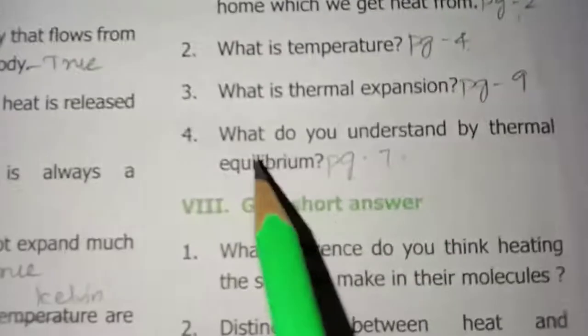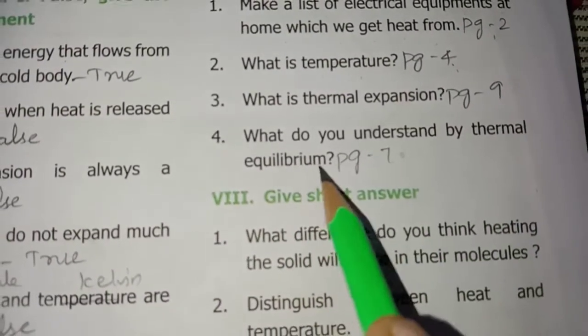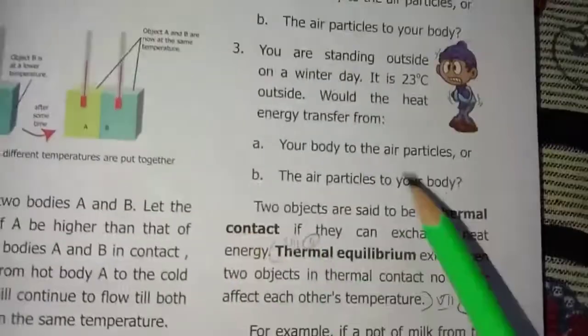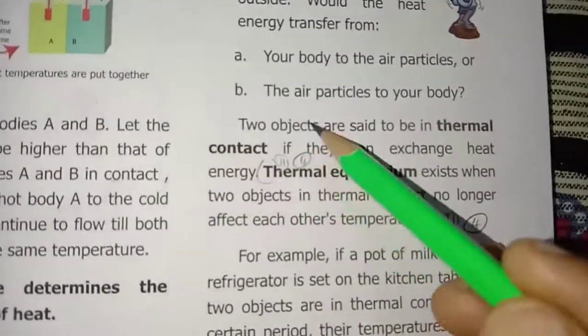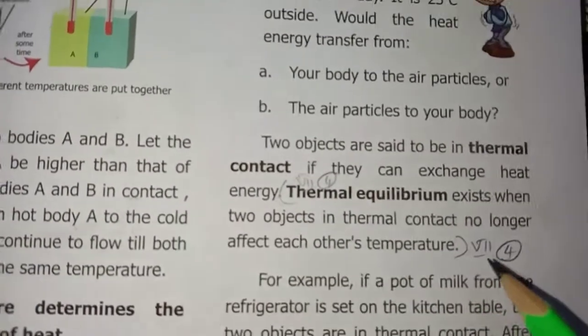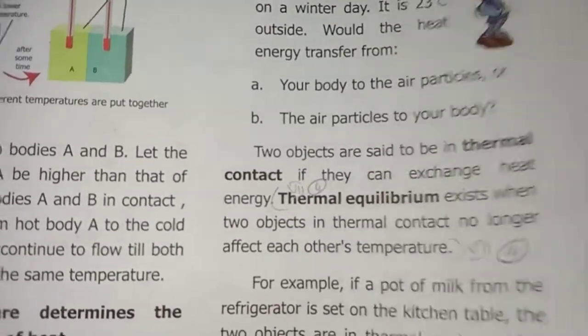Fourth question: What do you understand by thermal equilibrium? Page number seven. Turn to page number seven. Thermal equilibrium - in the paragraph, two objects. In that section, third line, thermal equilibrium. Start from temperature and close it. That's the fourth answer.